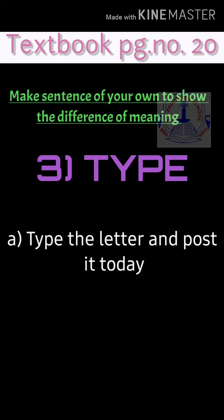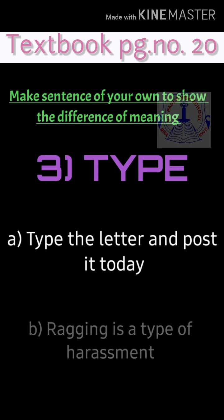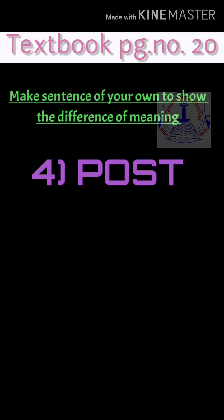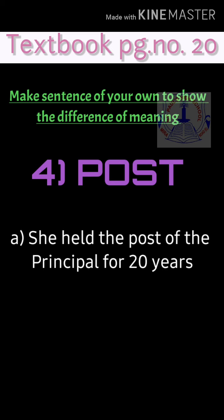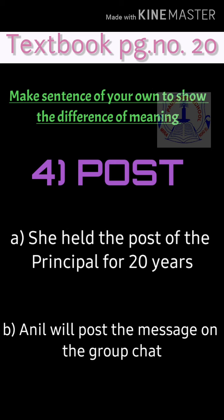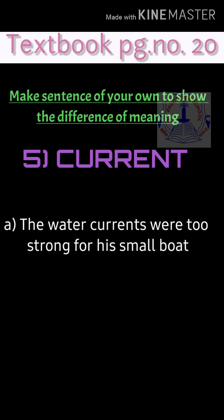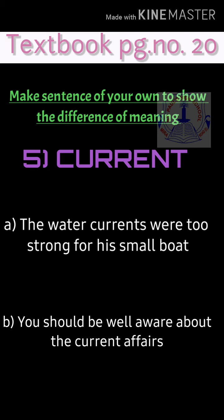Third, 'type': means to type a letter — 'Type the letter and post it today'; also means a kind of something — 'Ragging is a type of harassment.' Fourth, 'post': means a position of authority — 'She held the post of principal for 20 years'; also to post a message — 'Anil will post the message on the group chat.' Fifth, 'current': means recent affairs — 'You should be well aware about current affairs'; also means water or electricity current — 'The water currents were too strong for his small boat.'